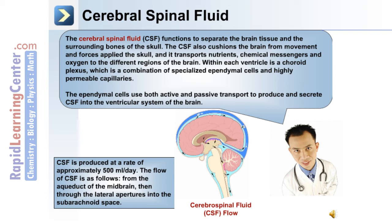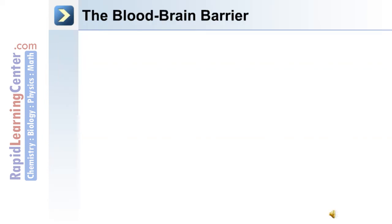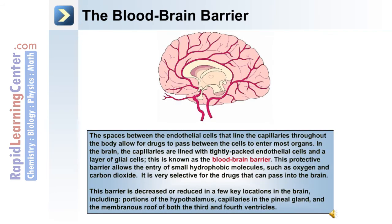CSF is produced at a rate of approximately 500 mL per day. The flow of CSF is as follows: from the aqueduct of the midbrain, then through the lateral apertures into the subarachnoid space. A major protective barrier for the brain is called the blood-brain barrier.